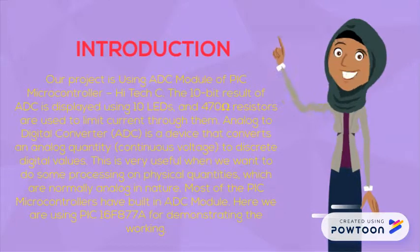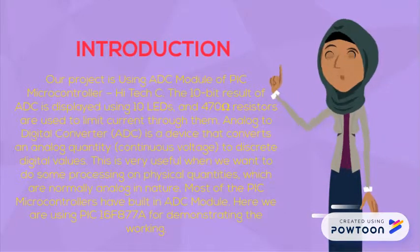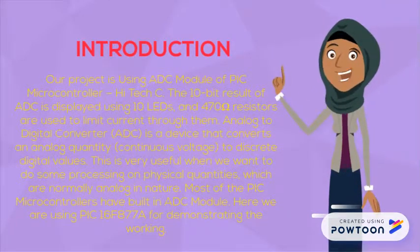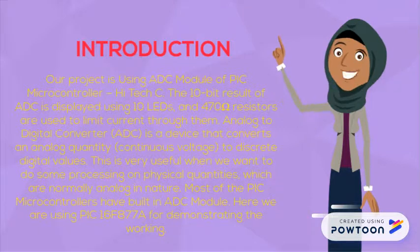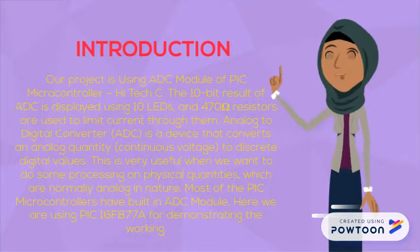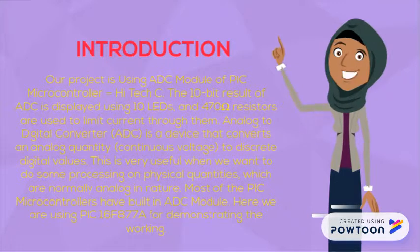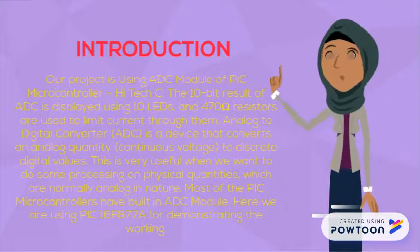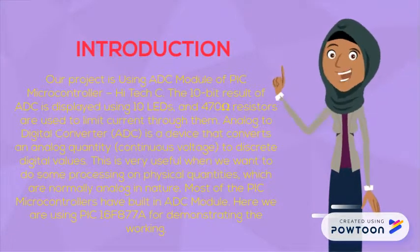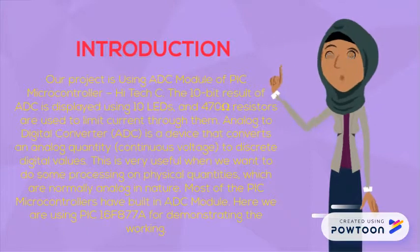An analog to digital converter is a device that converts an analog quantity — continuous voltage — to a discrete digital value. This is very useful when we want to do some processing of physical quantities which are normally analog in nature.